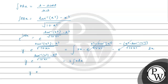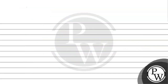So y · e^(tan⁻¹(x³) − x³/√(1+x⁶)) equals 2x²/2 + c. The 2s cancel, giving us the solution: y · e^(tan⁻¹(x³) − x³/√(1+x⁶)) = x² + c.